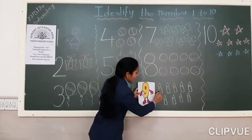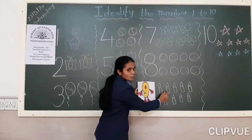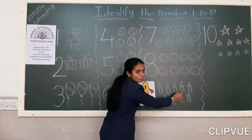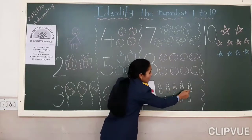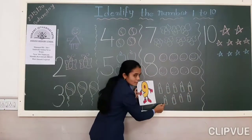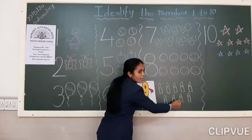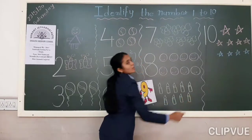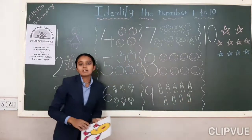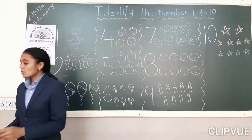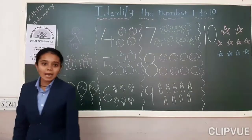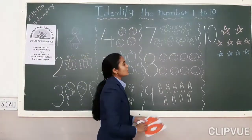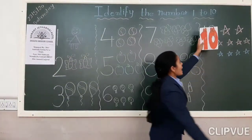Let me count. 1, 2, 3, 4, 5, 6, 7, 8, 9. When she was on the terrace at night, she was looking at 10 stars.